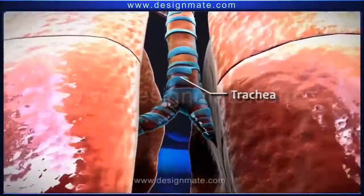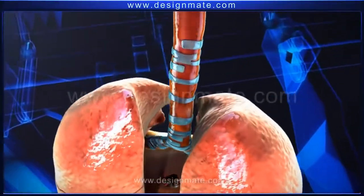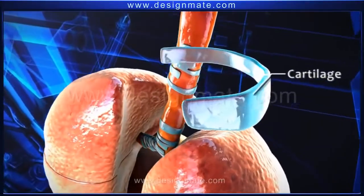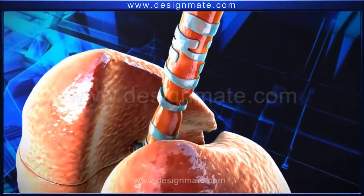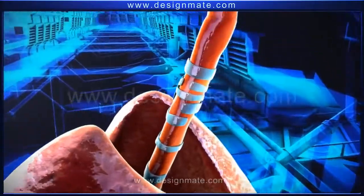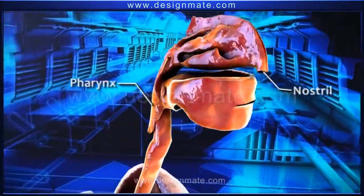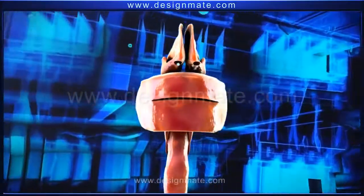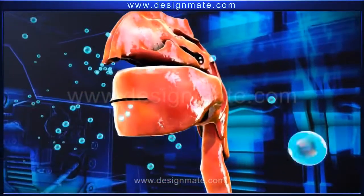Both lungs are associated externally with small tubular bronchi, which unite and extend into the trachea. The trachea has incomplete C-shaped rings of cartilage, which prevent the tracheal wall from collapsing. The trachea leads into the pharynx, which is connected to the nostrils.